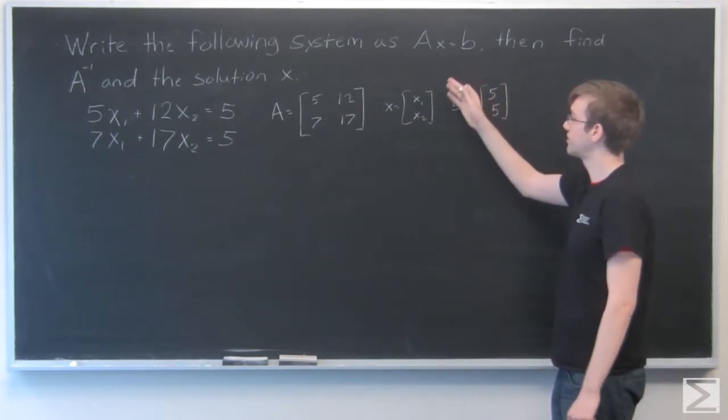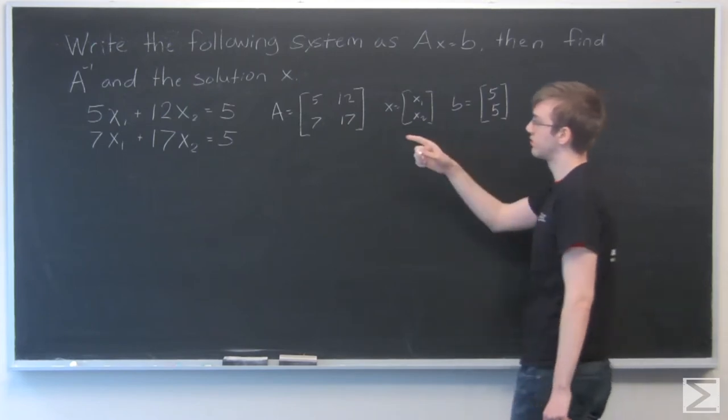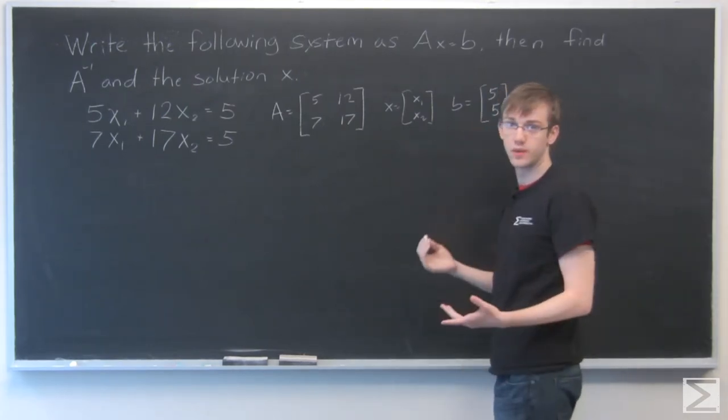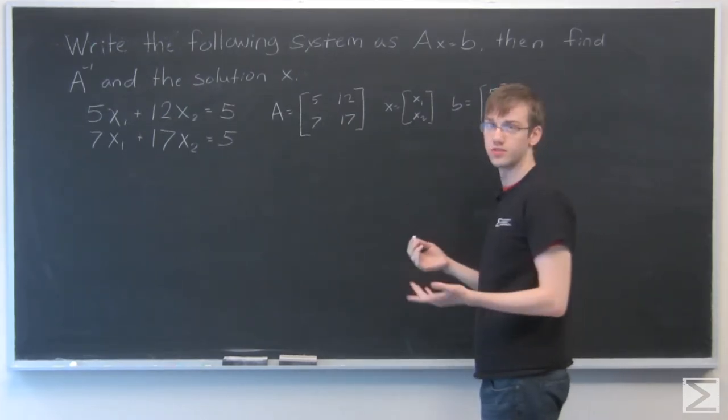When we have AX equals B, if we solve for A inverse we can multiply both sides by A inverse and that will allow us to solve for X.